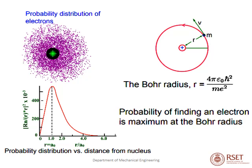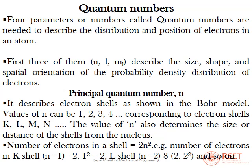Four parameters called quantum numbers are needed to describe the distribution and position of electrons in an atom. The first three — n, l, m — describe the size, shape, and spatial orientation of the probability density distribution of electrons. The principal quantum number n describes electron shells labeled 1, 2, 3, 4, or K, L, M, N. K has the lower energy. The value of n determines the size or distance of the shells from the nucleus.